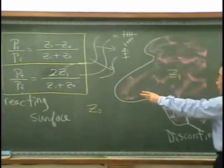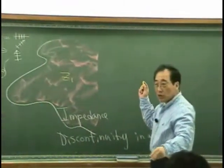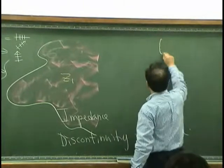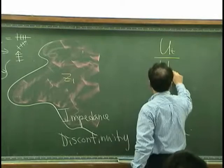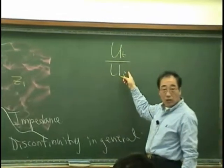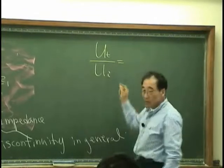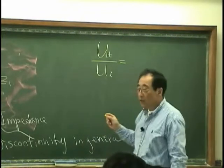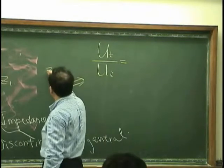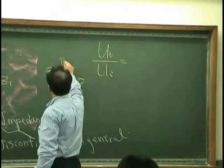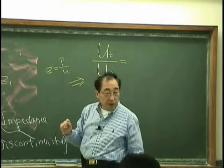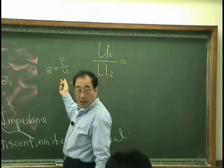Okay, to calculate the power, we need to calculate velocity, right? So what is UT over UI? UT is transmitted velocity's magnitude and UI is incident wave's velocity. What is this? And we know that the impedance is P over U for plane wave case, right?